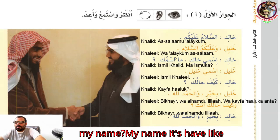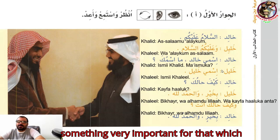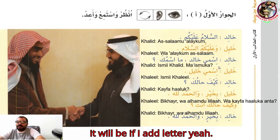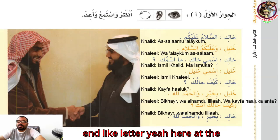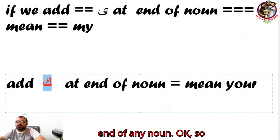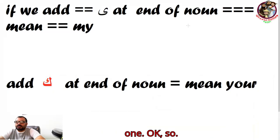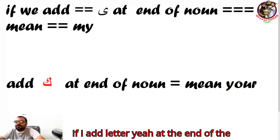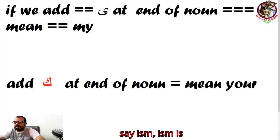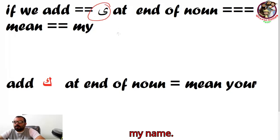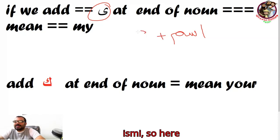To say 'my name,' there is something very important: if I add the letter 'ya' at the end of any noun, it means 'my.' So 'ism' means name, and if I add the letter 'ya' at the end, 'ismi' means 'my name.'